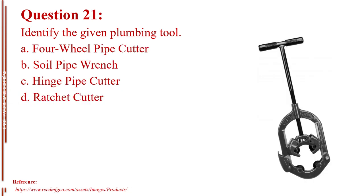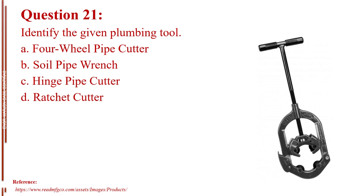Question number twenty-one. Identify the given plumbing tool. Letter A, four-wheel pipe cutter. Letter B, soil pipe wrench. Letter C, hinge pipe cutter. Letter D, ratchet cutter. The answer is Letter C, hinge pipe cutter.